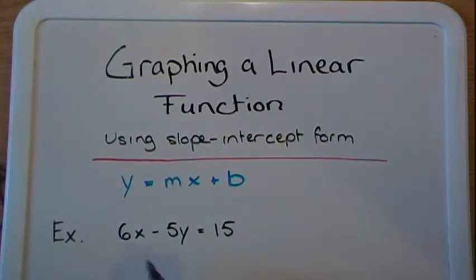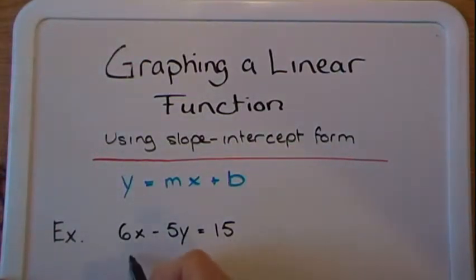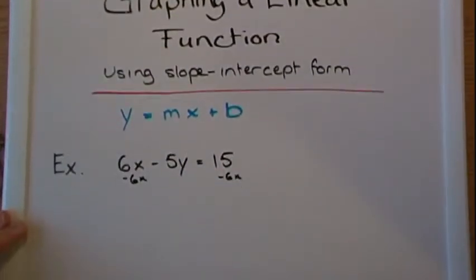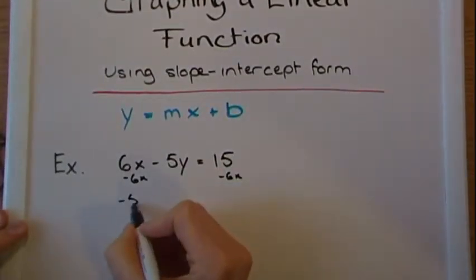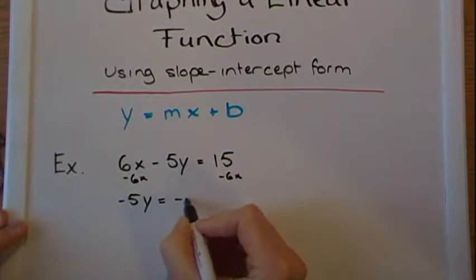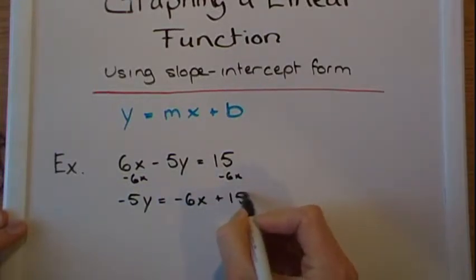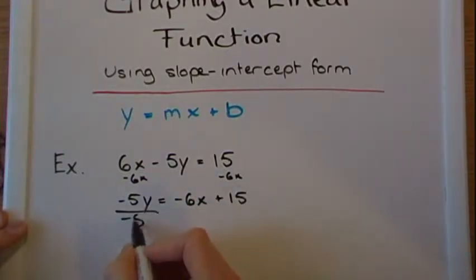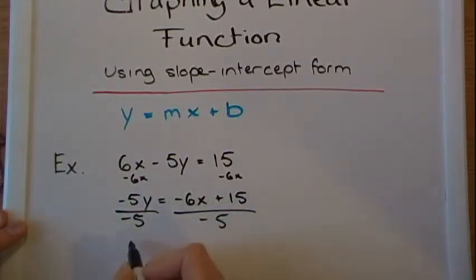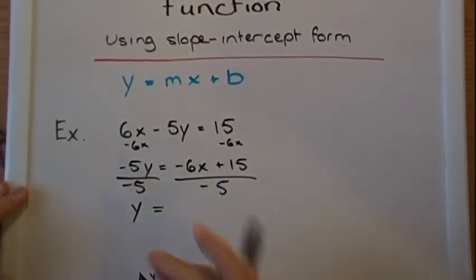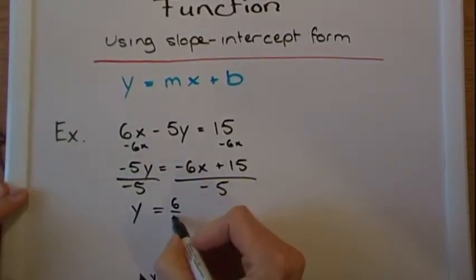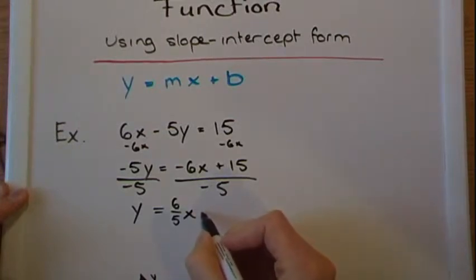So let's solve this equation for y. So we move the 6x over so we get negative 5y equals negative 6x plus 15. Divide by negative 5. We're going to get y equals 6/5x minus 3.